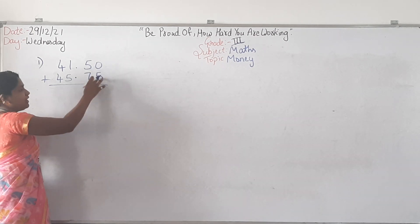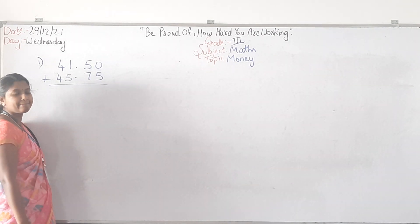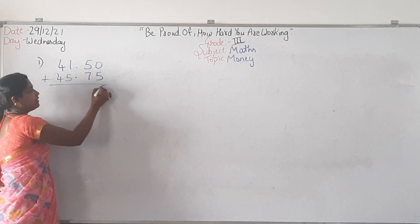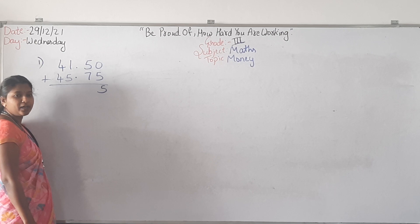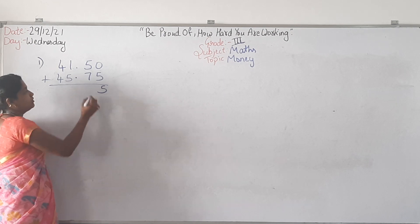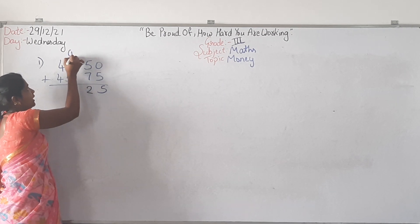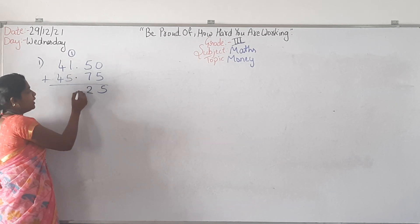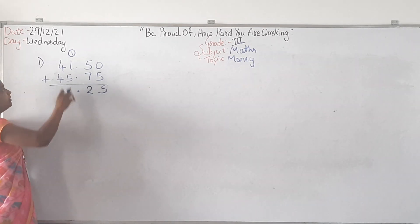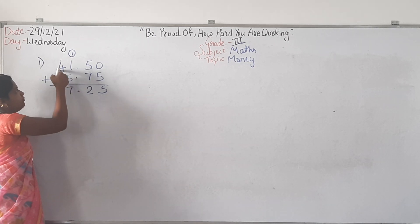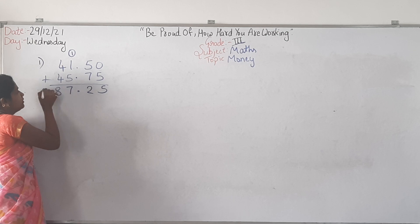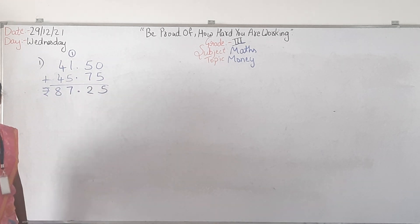What is 0 plus 5? 5. 5 plus 7? We can add 2. 5 plus 7 is — write 2 and do 1 carry. Don't forget to put the point. Then 1 plus 1 is 2. 2 plus 5 is 7. 4 plus 4 is 8. So the answer is rupees 87.25.